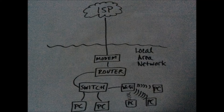Think of it this way: if you have a hardwired connection, you have your own private hallway to move data through. If you're using a wireless connection, you're sharing an even smaller hallway — because it's basically a law of computing that wireless is never faster than its wired counterpart. You are sharing that smaller hallway with everyone else using that Wi-Fi access point, which is why gamers and those who want low latency, speed, and reliability usually insist on a wired connection.